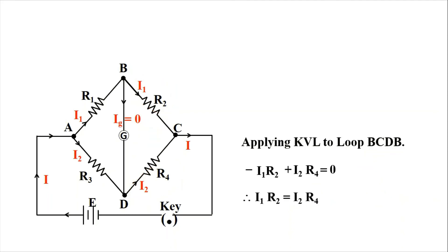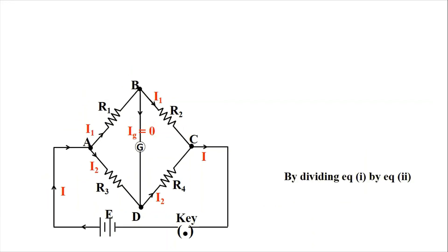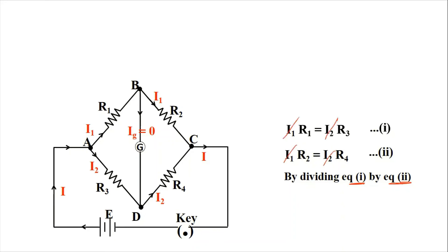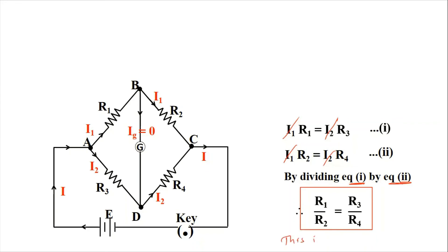Dividing Equation 1 by Equation 2: I1 and I2 cancel on both sides, giving R1 by R2 = R3 by R4. This is the balancing condition of the Wheatstone Bridge. When R1/R2 = R3/R4, no current flows through the galvanometer.